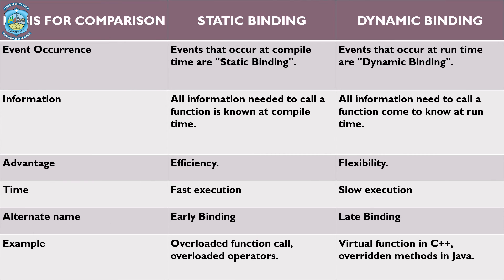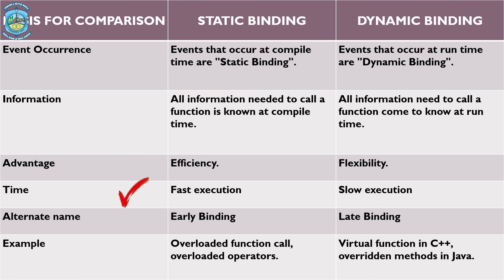Finally, let us have a comparison of static binding and dynamic binding. Events that occur at compile time are called static binding, whereas those at runtime are called dynamic binding. All information needs to be known at compile time for static binding, whereas for dynamic binding it is available only at runtime. Static binding is more efficient but dynamic binding is more flexible. The execution of static binding is fast whereas dynamic binding is slow. Overloaded function calls and overloaded operators are examples of static binding, whereas virtual functions in C++ and overridden methods in Java support dynamic binding.